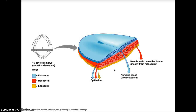The three germ layers in development are the ectoderm, mesoderm, and endoderm. The ectoderm gives rise to nervous tissue and epithelial tissue. The mesoderm gives rise to muscle and connective tissue. The endoderm also gives rise to epithelial tissue.